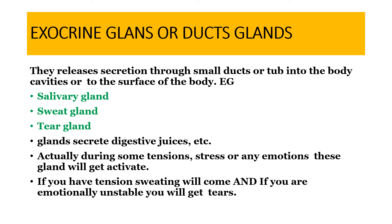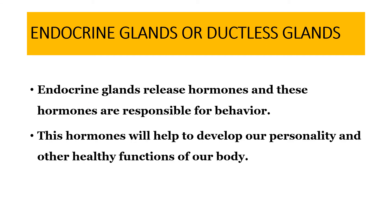Exocrine glands release secretions through small ducts or tubes into body cavities or to the surface of the body. Examples include salivary glands, sweat glands, and tear glands. During tension, stress, or emotion these glands activate — for example, sweating occurs under tension, and tears occur when emotionally unstable — showing that exocrine glands are directly related to behavior.